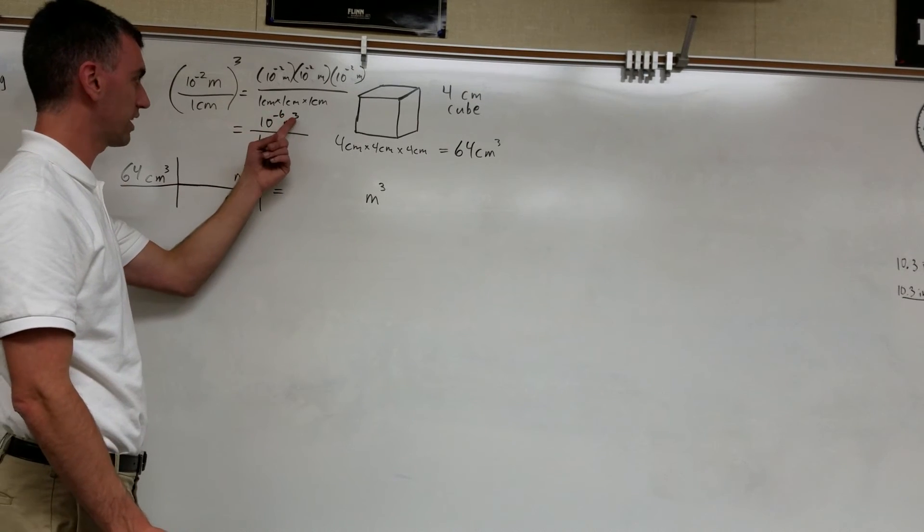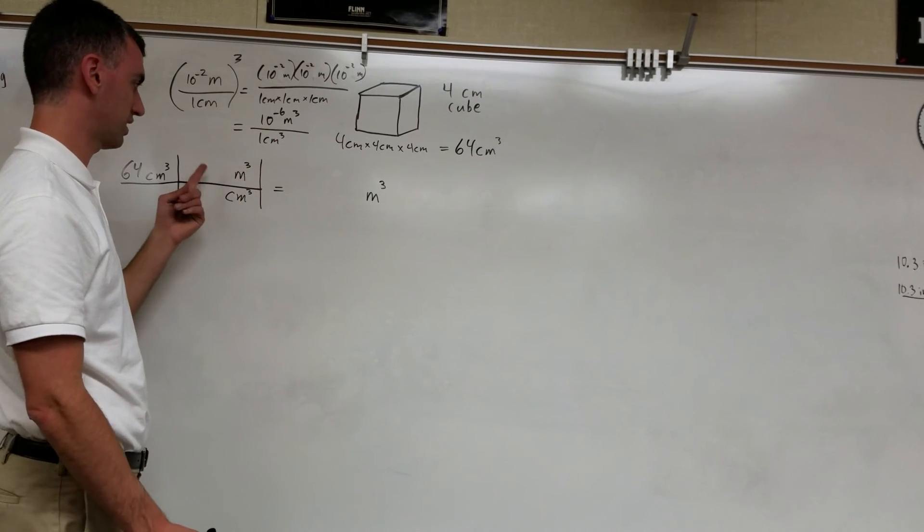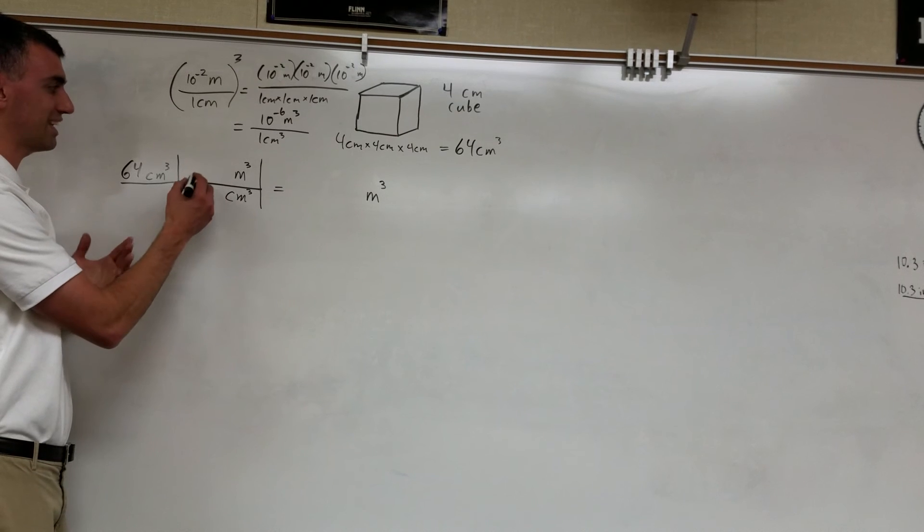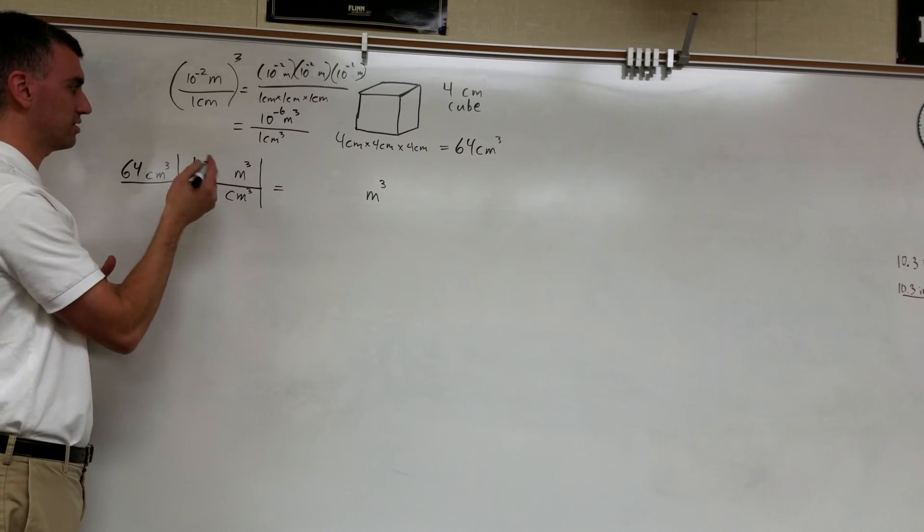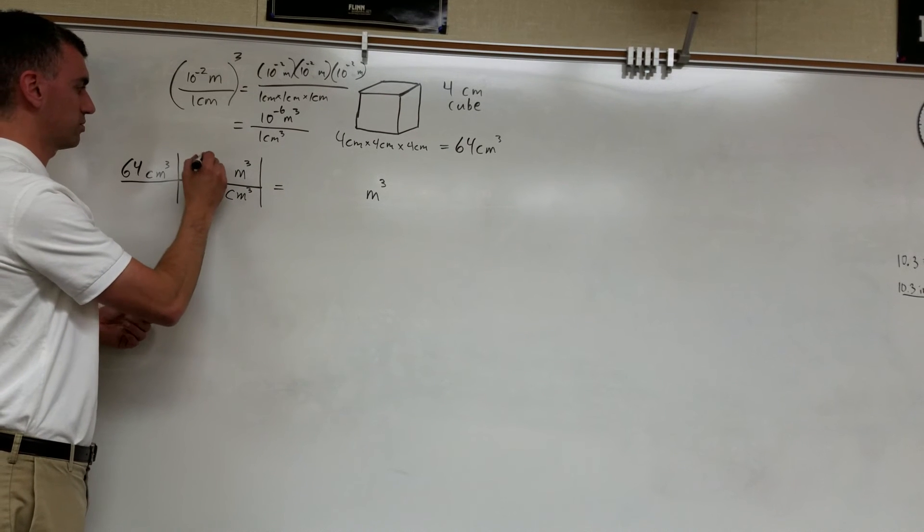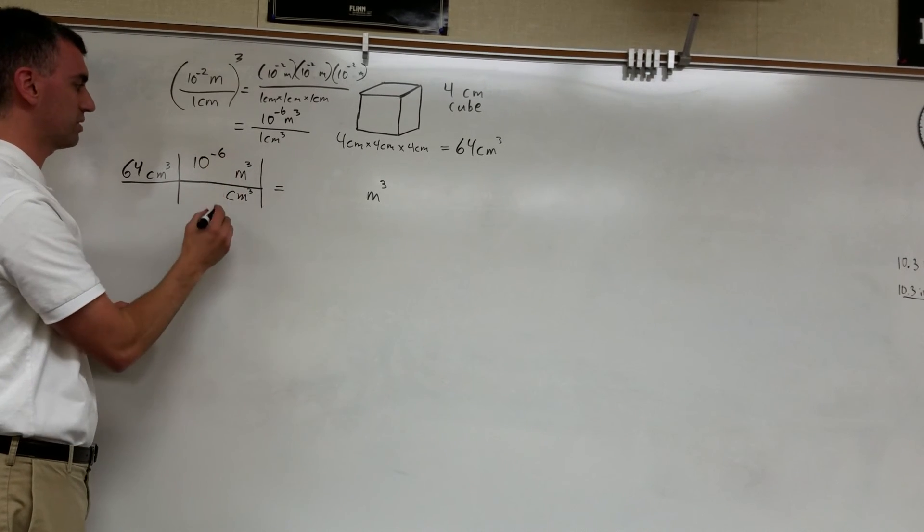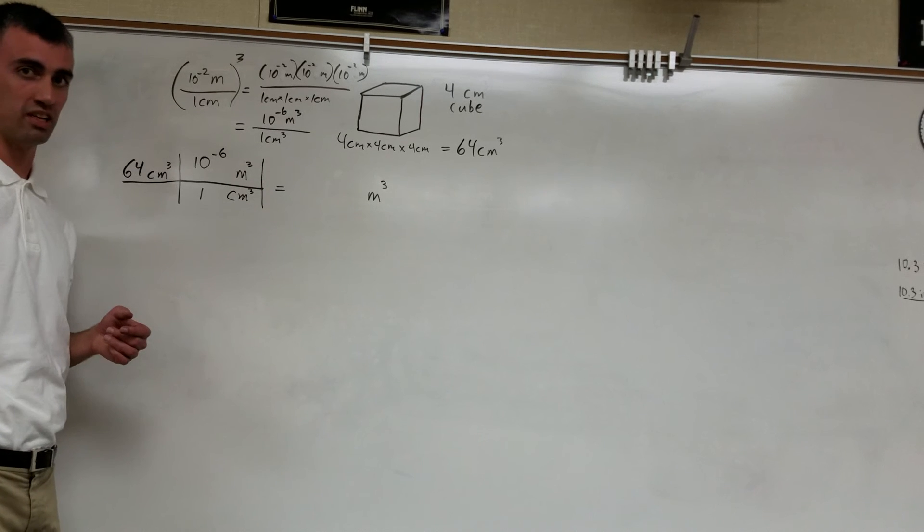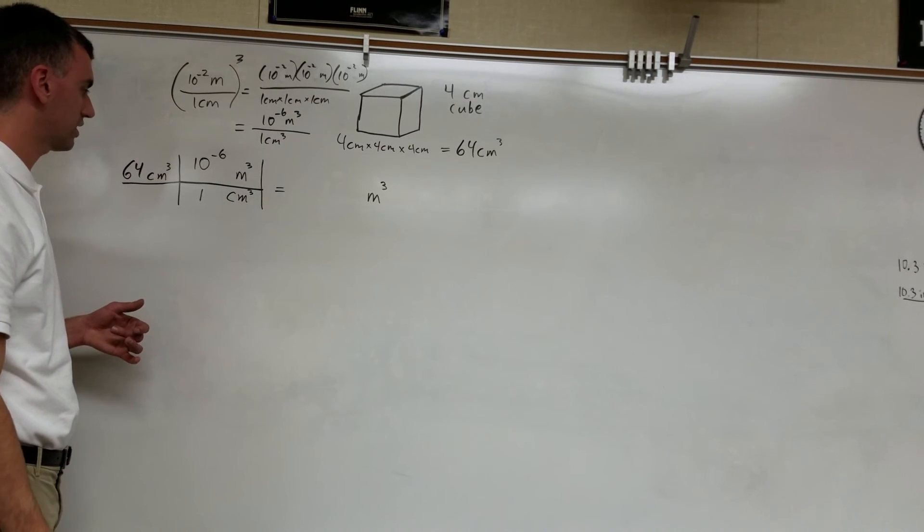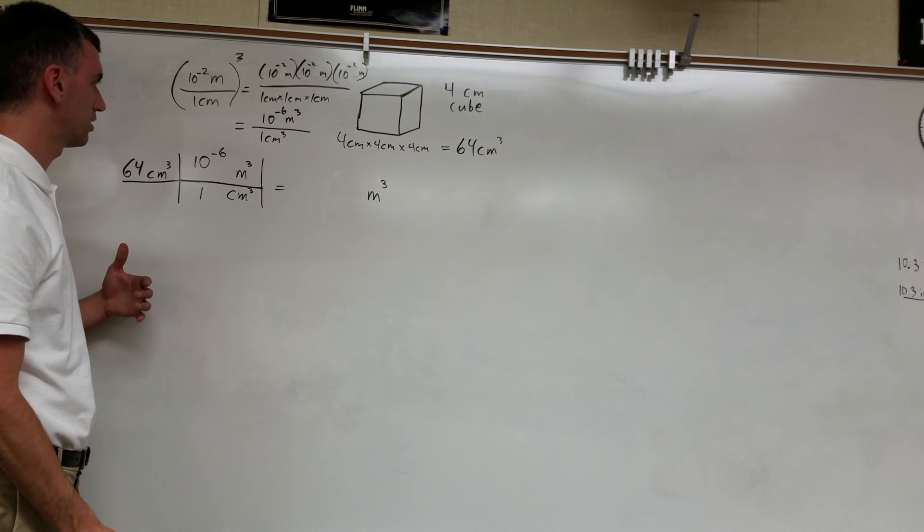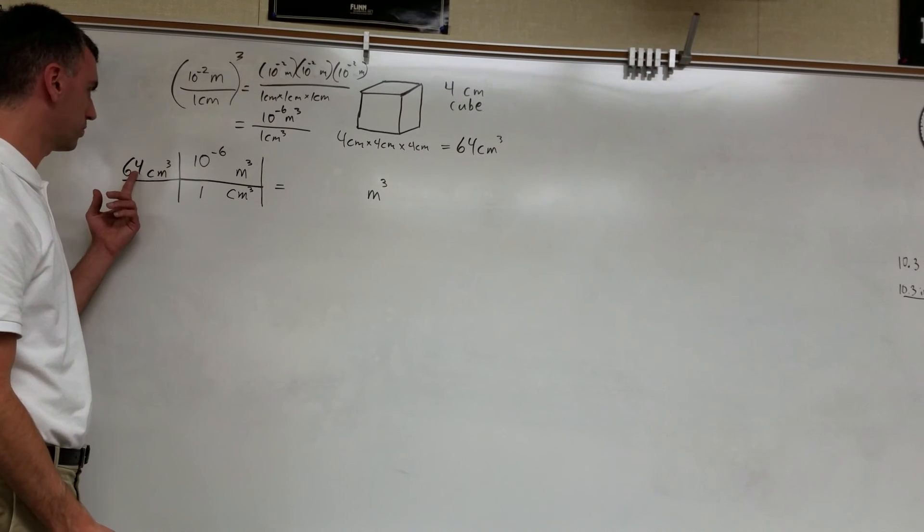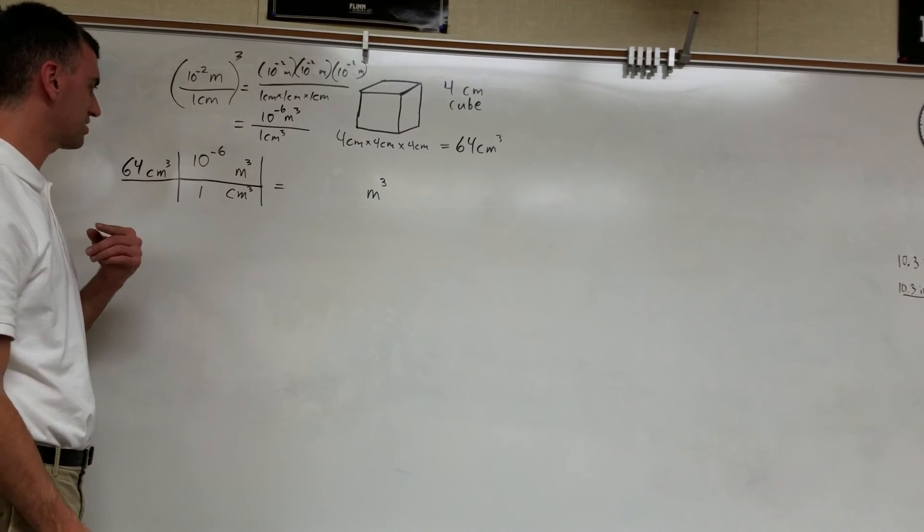Now I've got meters cubed over centimeters cubed, which is exactly what I'm looking for here. So I put that same thing into this conversion factor. So, 10 to the negative 6 cubic meters is equal to 1 cubic centimeter. What does that give me in the end? It gives me 64 times 10 to the negative 6th.